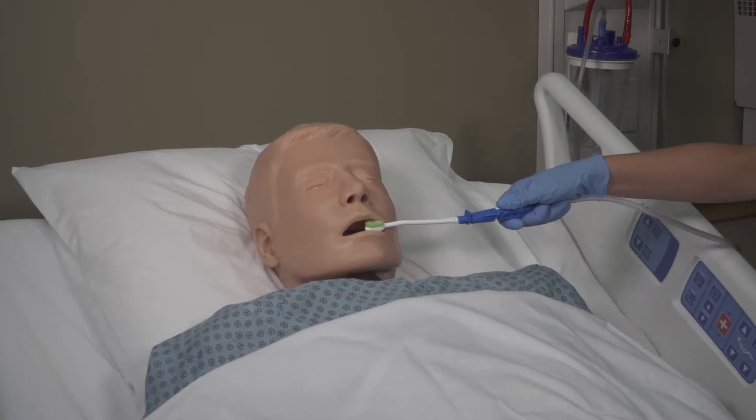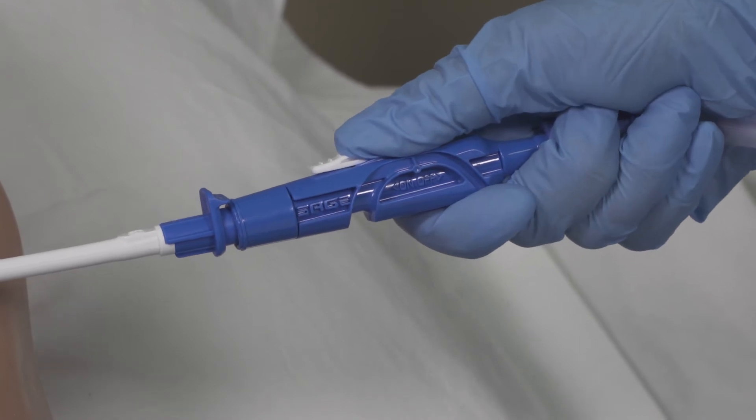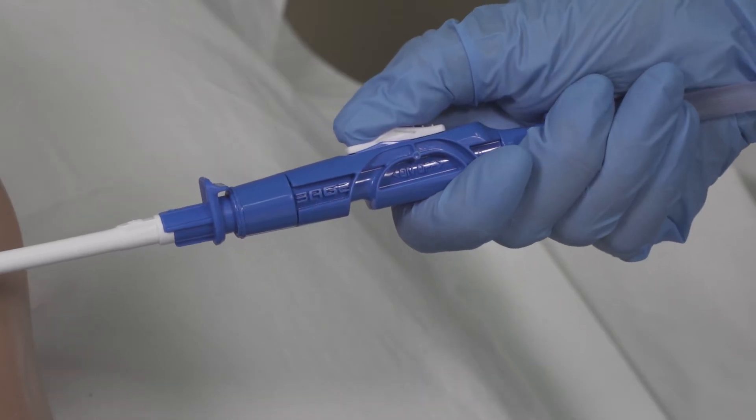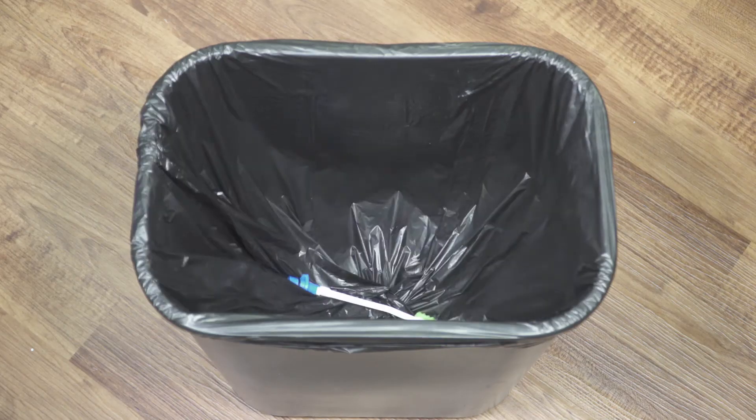Brush the teeth and the oral cavity. To suction slide the switch to on. When finished slide the switch to off. Rinse to clear the line. Disconnect and discard the suction toothbrush.